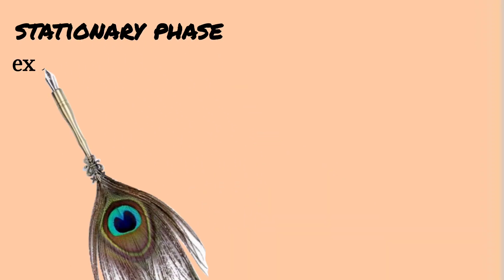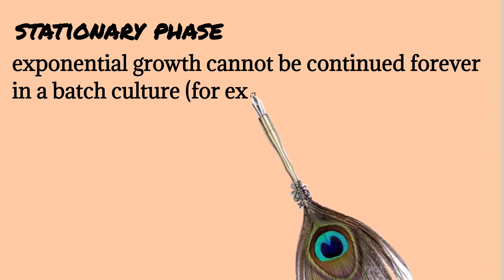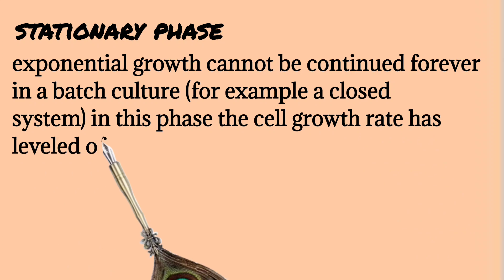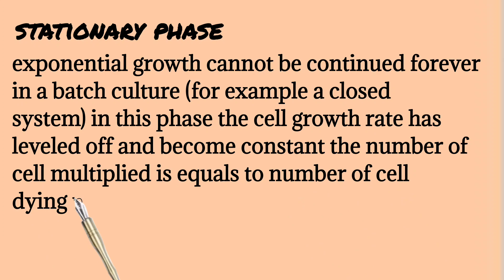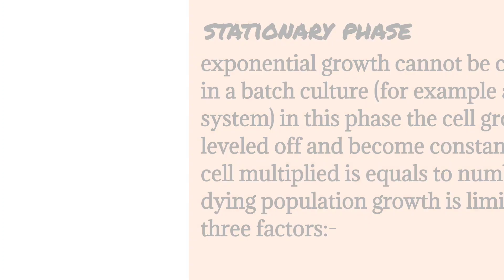The stationary phase. Exponential growth cannot be continued forever in a batch culture, for example, a closed system. In this phase, the cell growth rate has leveled off and become constant. The number of cells multiplied is equal to the number of cells dying.